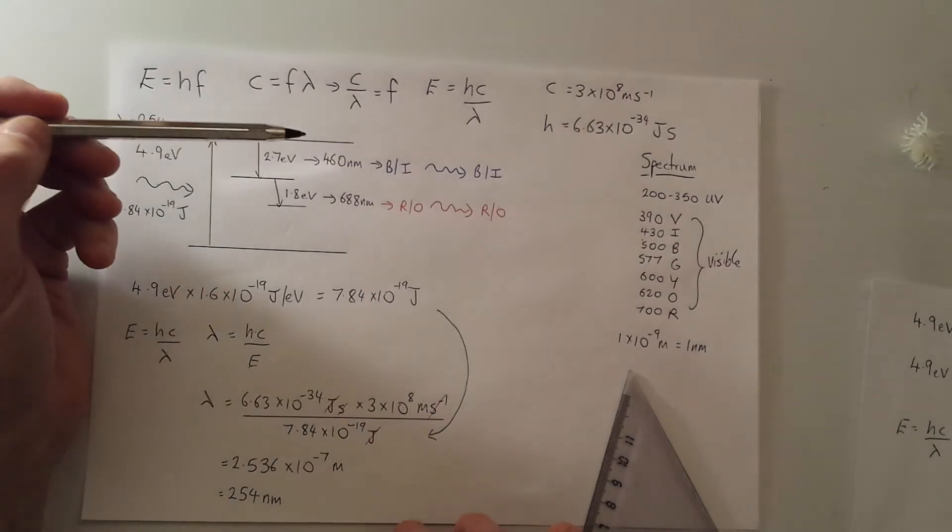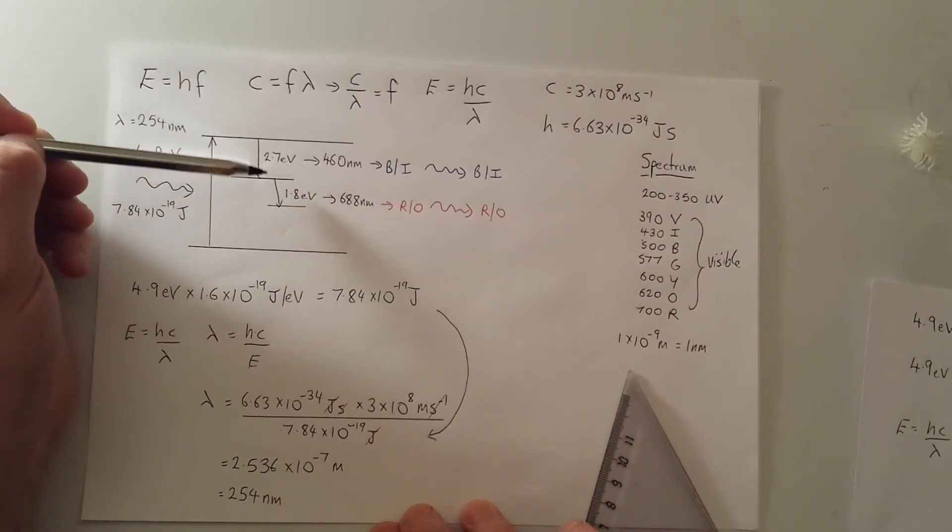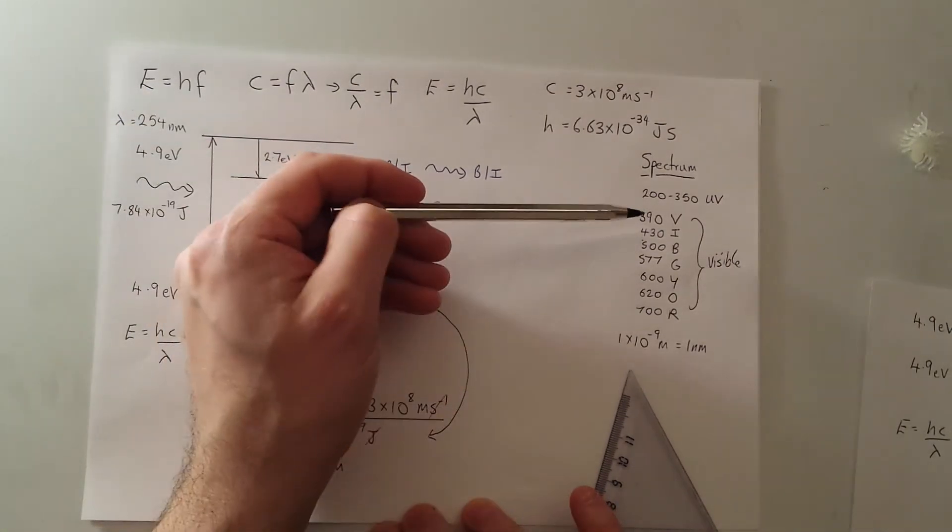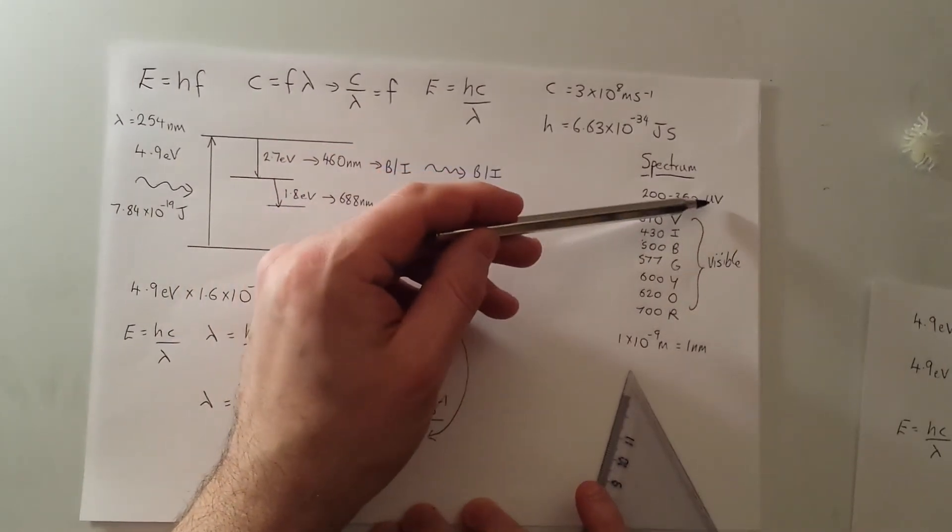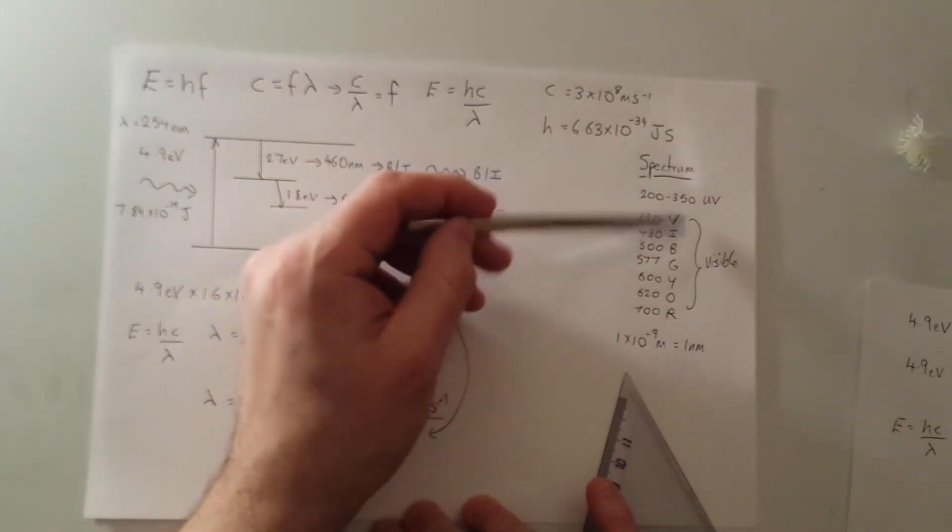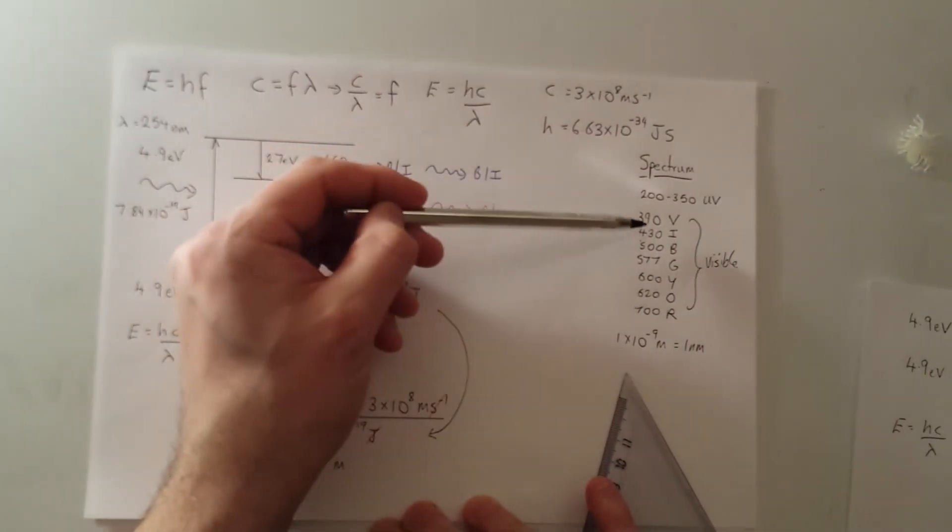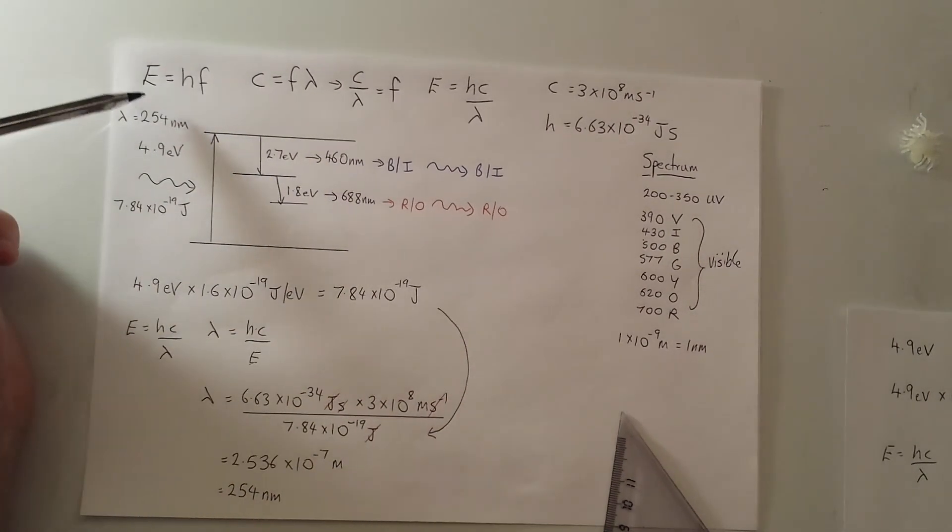And we can see there that the visible spectrum is when you have a smaller number of eV, and depending on what number, if we go across to here, we can see 2 to 350 is roughly UV, 390 to 700 is the visible range, and we've got a range of colors in between. So we've just used the formula E equals HF, and looked at a very simple idea of fluorescence.